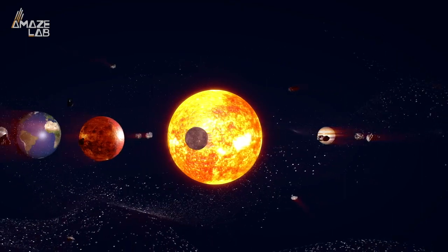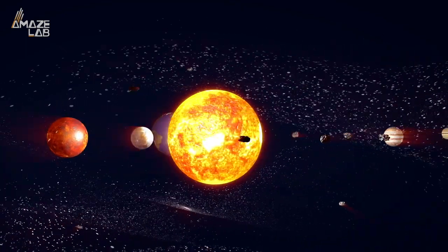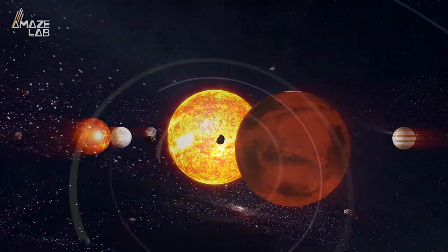Ever since Pluto was reclassified as a dwarf planet in the Kuiper Belt, our solar system has been a small family of eight.